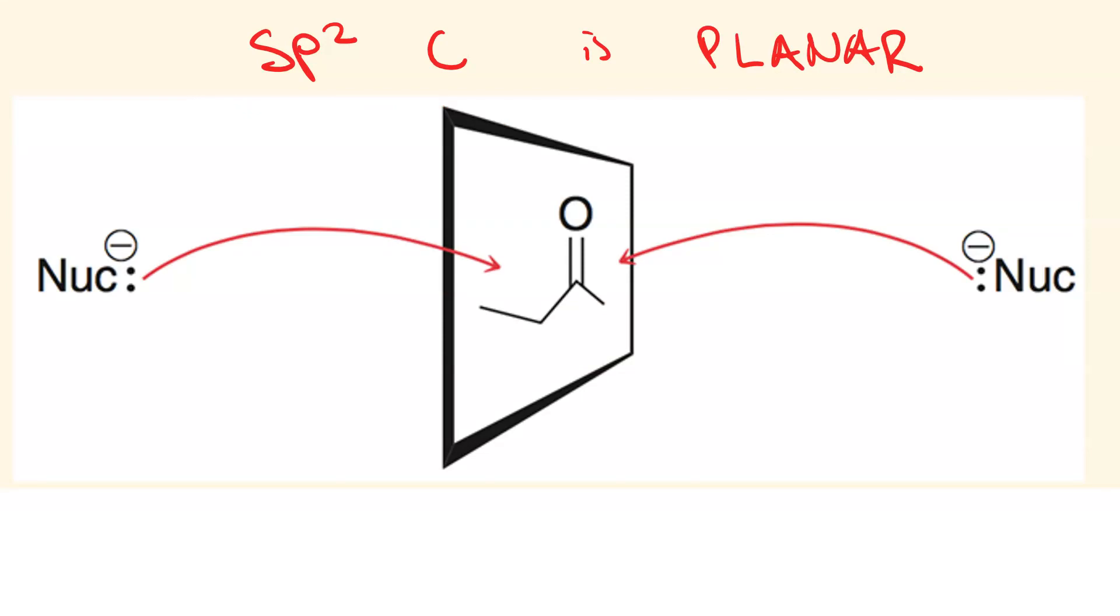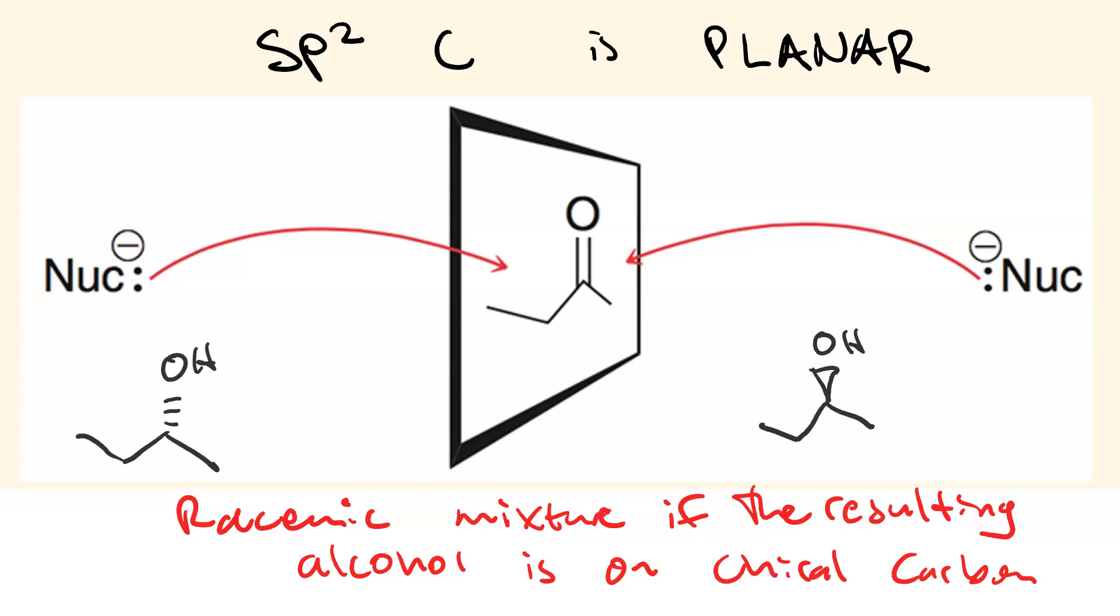So the nucleophile can attack from below the plane. This would give us the OH on a dash. Or above the plane, which would give us the OH on a wedge. So you'll always get a racemic mixture if the alcohol formed is on a chirality center.